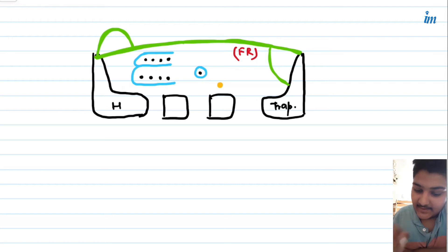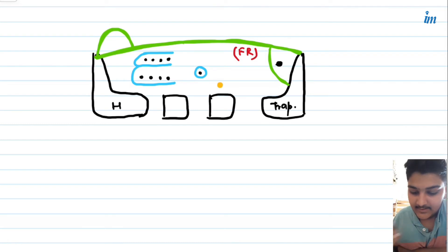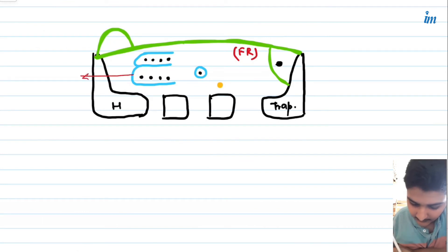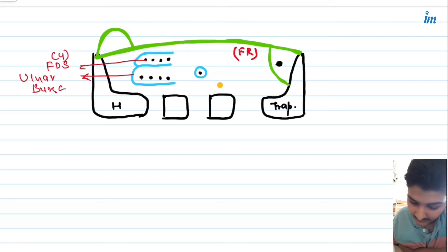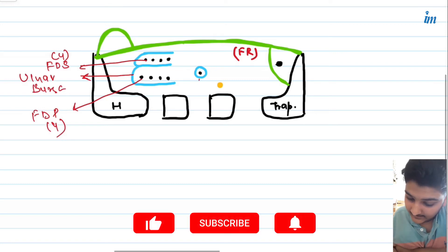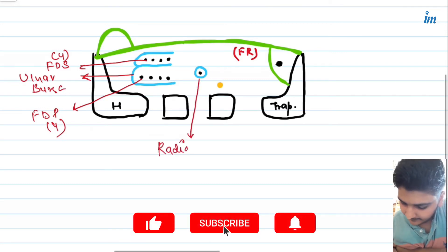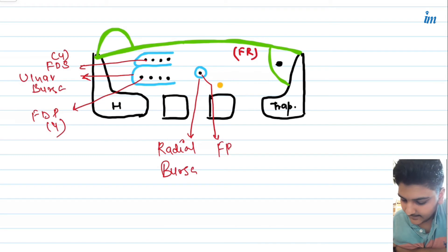In the deep slip of the flexor retinaculum, we have the tendon of flexor carpi radialis. So to summarize the deep structures: ulnar bursa with four tendons of flexor digitorum superficialis and four tendons of flexor digitorum profundus; radial bursa with the tendon of flexor pollicis longus; median nerve; and in the deep slip, the tendon of flexor carpi radialis.